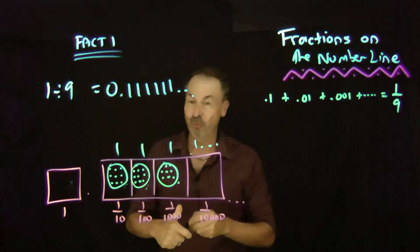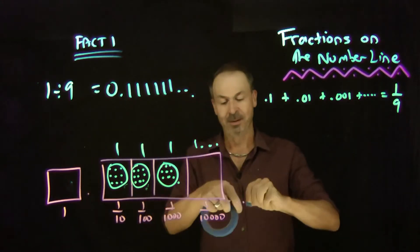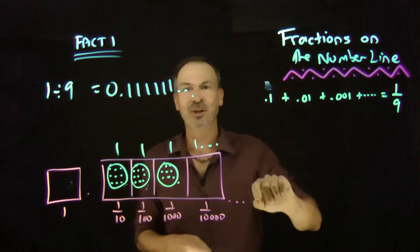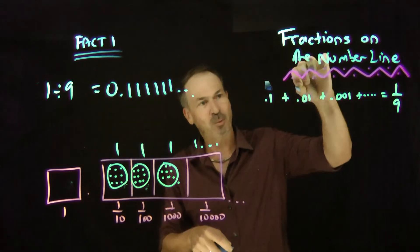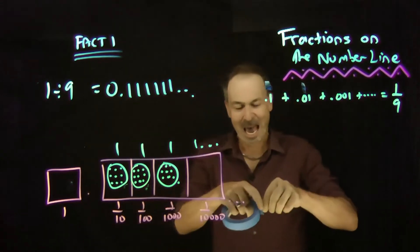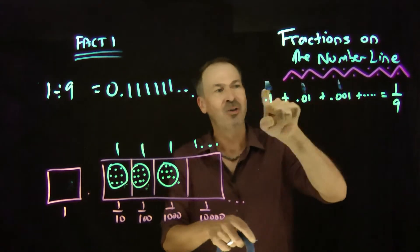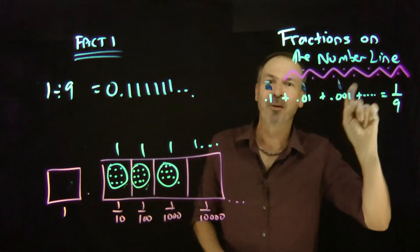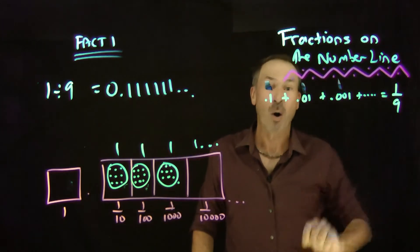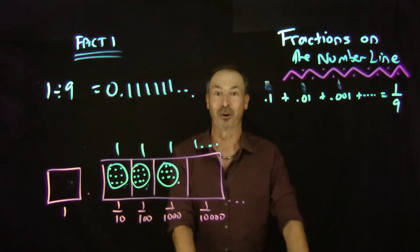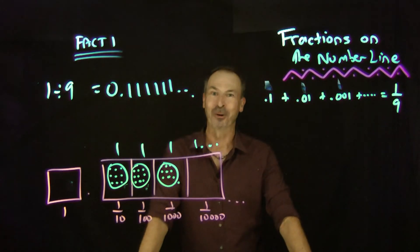Now let me make this practical. If I have 1 tenth of an inch of ribbon, and I add 1 hundredth of an inch of ribbon, plus a thousandth of an inch of ribbon, and I could do that forever — what's the total amount of ribbon I used? It all adds up to just 1 ninth of an inch of ribbon in total. This sum of ribbon lengths is just 1 ninth of an inch in total.